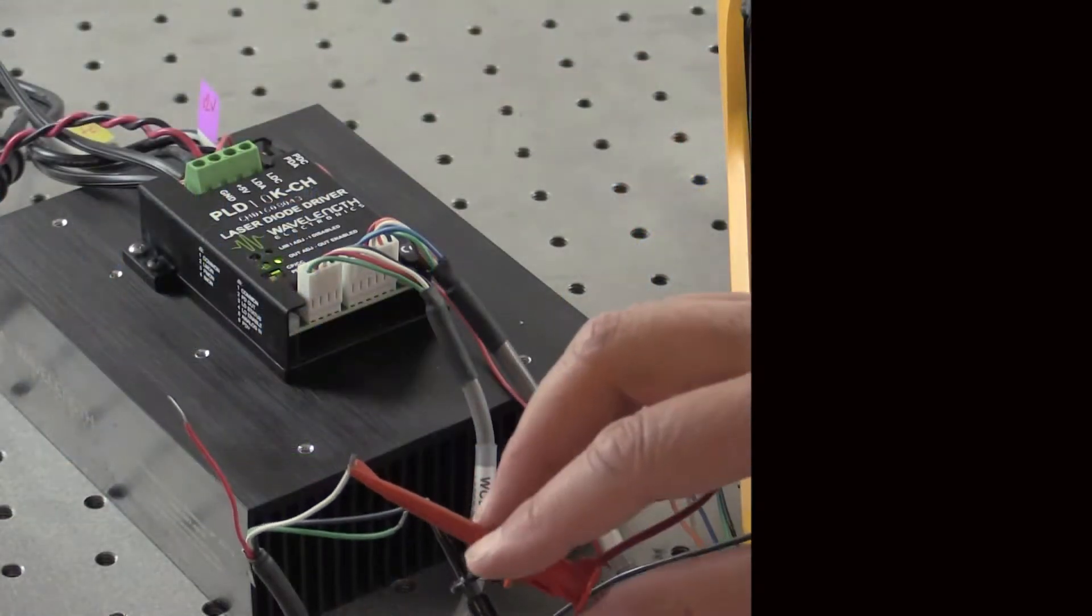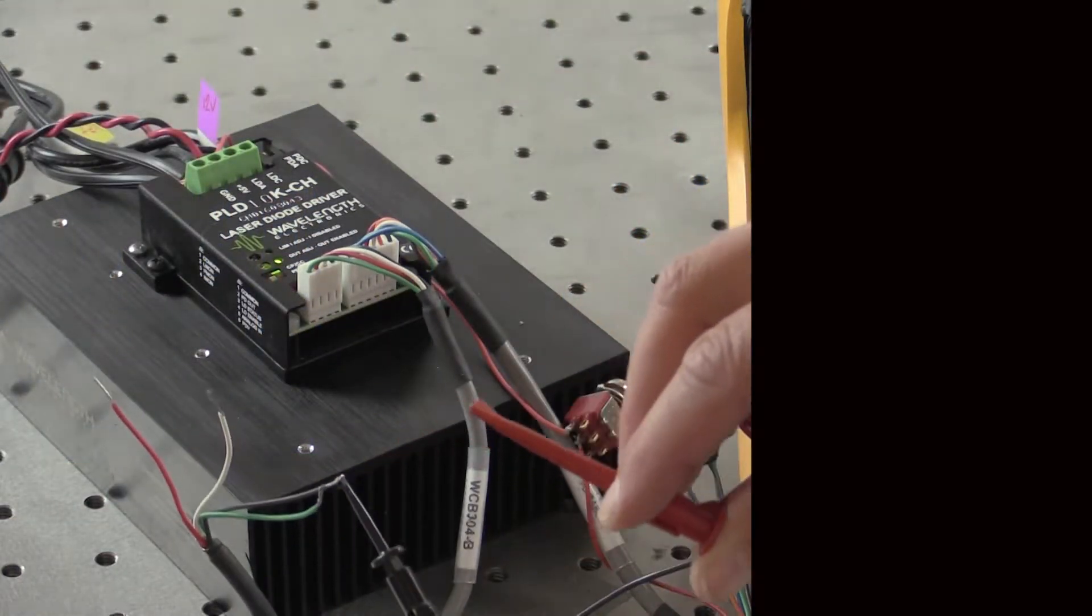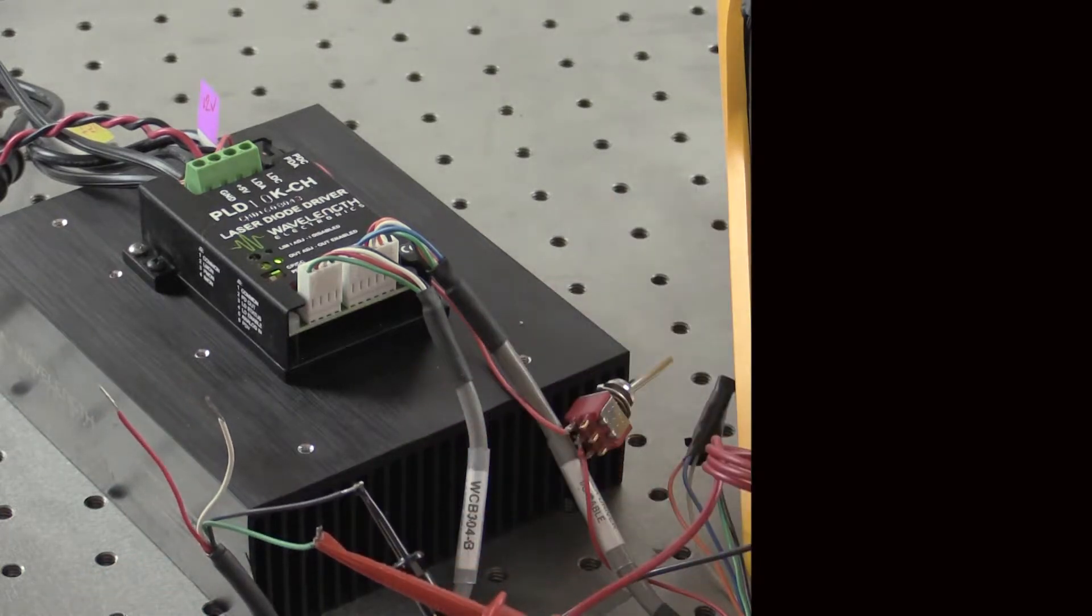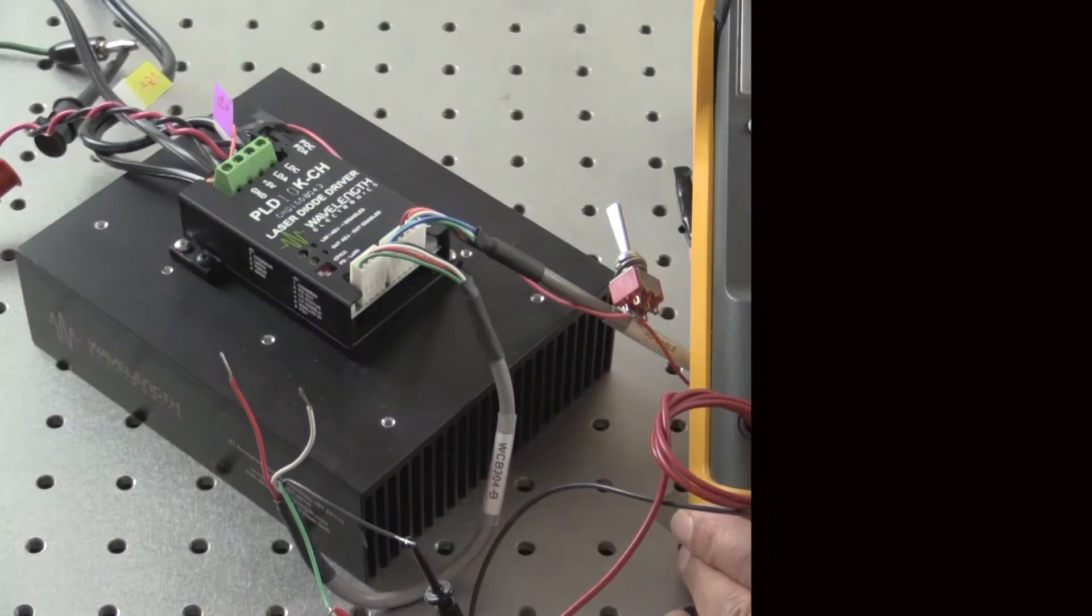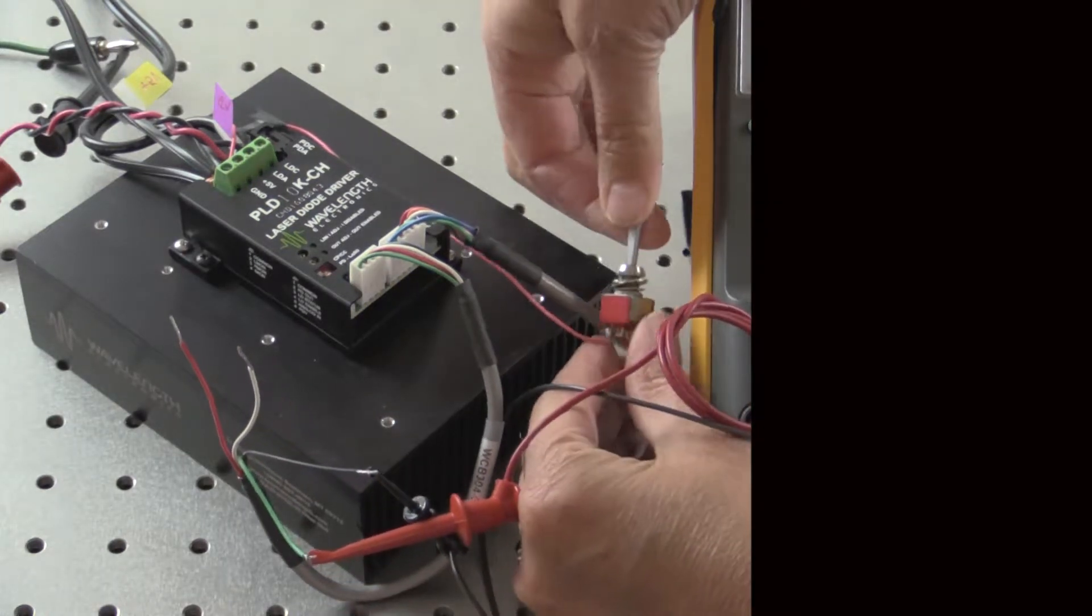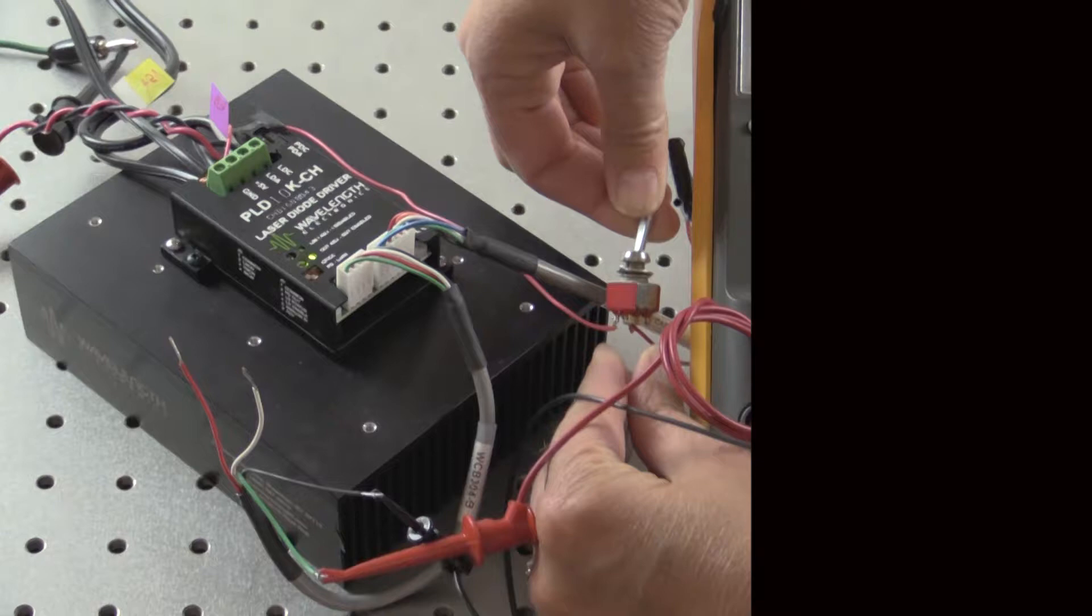Now, set up the monitor to read actual current. Move the positive lead of the multimeter to imon, pin 4 on J2. Enable current by tying LD enable, pin 4 on J3, to plus 5 volts. The green output on LED lights.